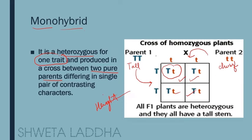This cross is between two pure parents — one pure for tallness, one pure for dwarfness. If we consider a cross between two pure parents for two traits, it will produce a dihybrid. If we consider a cross between two pure parents for three traits, we will get a trihybrid.